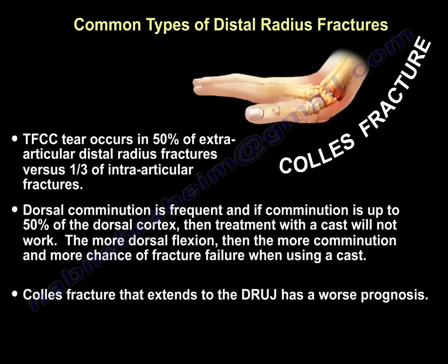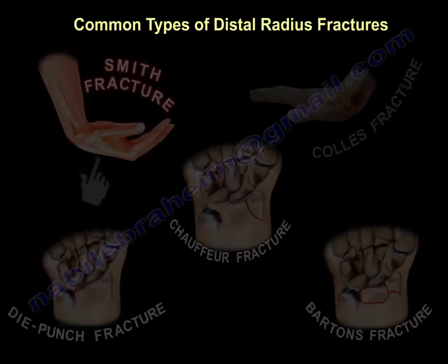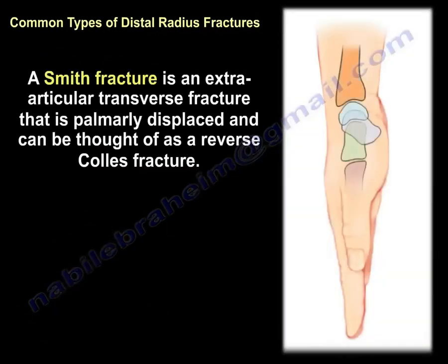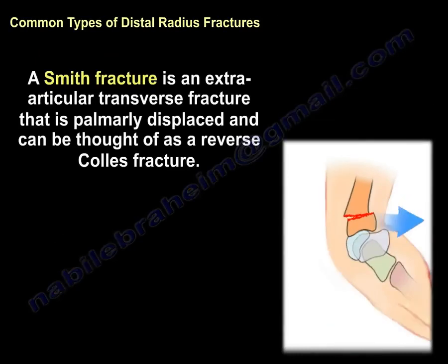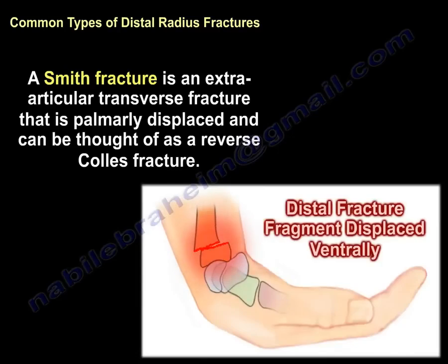A Colles' fracture that extends to the DRUJ has the worst prognosis. Another type is a Smith fracture — predominantly an extra-articular transverse fracture that is palmarly displaced and is always thought to be a reverse Colles' fracture. You can see that the fracture fragment is displaced ventrally or palmarly.